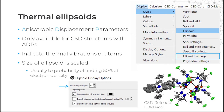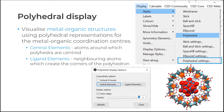There are settings you can change for the ellipsoid display by going to Display, Styles, Ellipsoid Settings. For example, you can change the probability of finding the electron density — it's normally set at 50%. If you're looking at metal-organic structures, you might be interested in the polyhedral display option, found under Display, Styles, Polyhedral. The central elements are the atoms around which polyhedra are centred, and the ligand elements are neighbouring atoms which create the corners. You can also make the polyhedron more transparent.